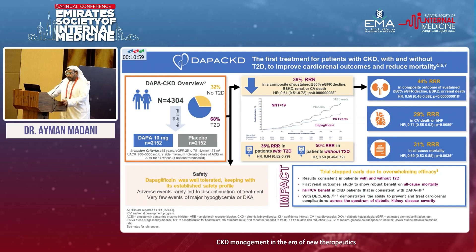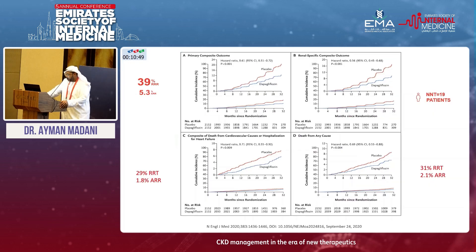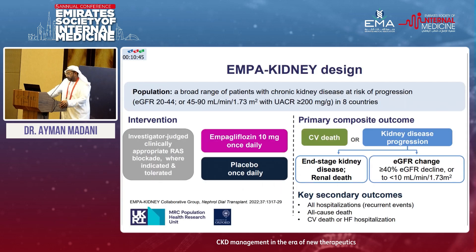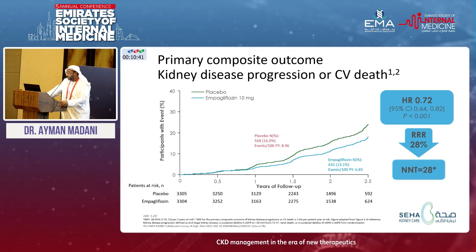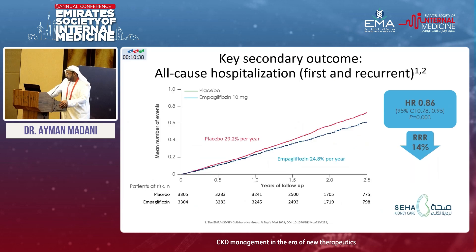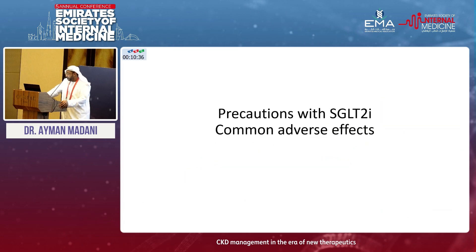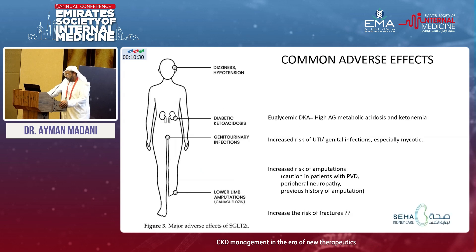The DAPA-CKD study, which we all know by now, was stopped early due to overwhelming efficacy. The EMPA-KIDNEY study was also a very important study with significant relative risk reduction. What is more practical to discuss are the precautions with prescribing SGLT2 inhibitors: dizziness, diabetic ketoacidosis, euglycemic DKA — which is becoming more commonly seen in the ER — and for nephrology, a lot of UTI cases.